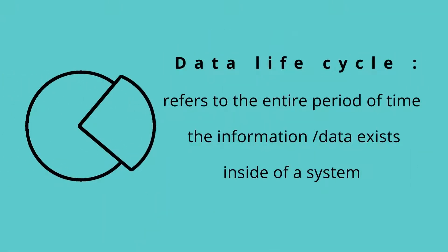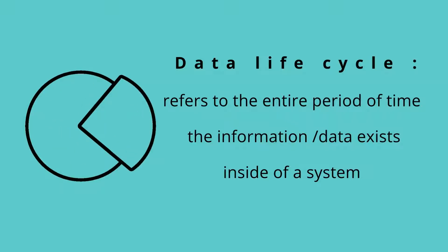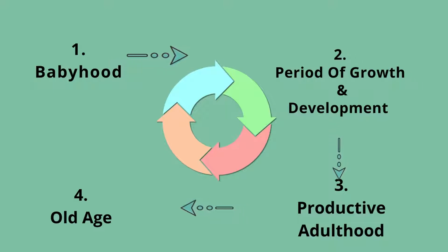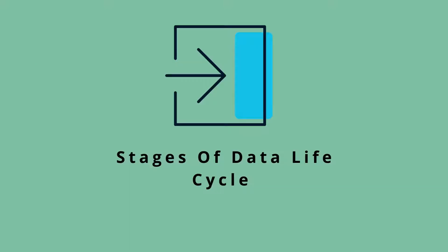The data life cycle, or the information life cycle, refers to the entire time the data exists in a system. In nature, all living things experience a series of phases: babyhood, a period of growth and development, productive adulthood, and old age. Similarly, the data life cycle includes all the stages the data passes through, from when it is first captured to the rest of the process. In a moment we will discuss each of the stages in that life cycle to help you understand the individual phases data goes through.